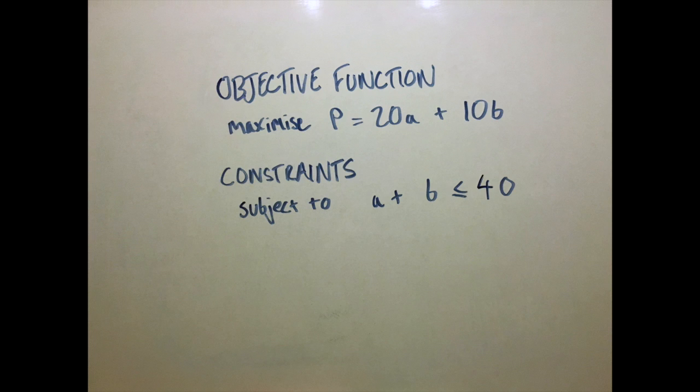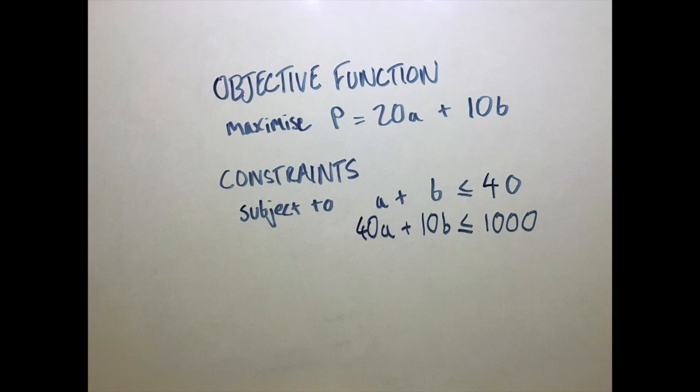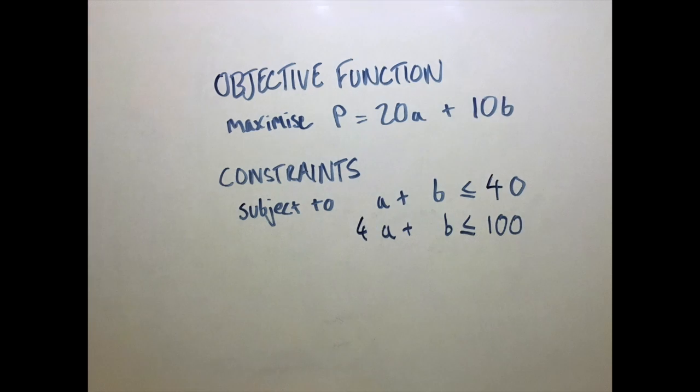We also know that chairs of type A require 40 hours to produce and chairs of type B require 10 hours to produce. With only 1,000 man hours available each week, this gives us 40A + 10B ≤ 1000. Again, we can simplify this to 4A + B ≤ 100.